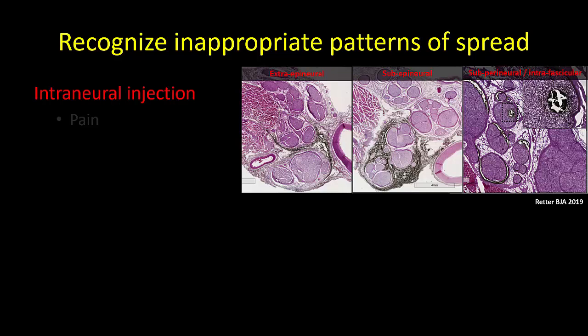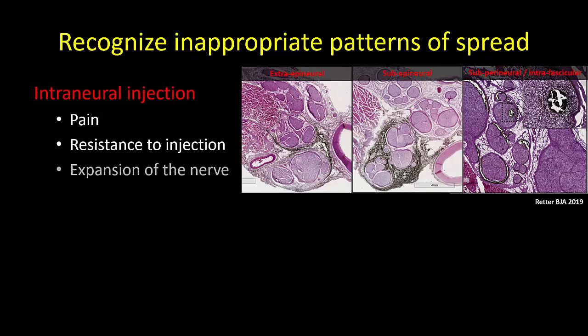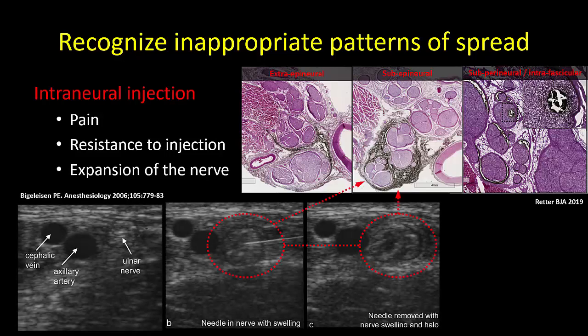Intraneural injection should be suspected if the patient complains of pain on injection or if there is resistance to injection. Pain is not a very sensitive or specific marker but it should always prompt you to carefully re-evaluate where you are. Similarly, resistance is usually a result of the needle tip being pressed up against a fascial layer rather than within the nerve, but again it should prompt re-evaluation. Expansion of the nerve is the hallmark of being within the epineural sheath. It is impossible to tell if the injectate is being contained just under the epineurium or is subperineural or even intravascular, and thus should be avoided. The only good news is that if you do accidentally inject a small volume intraneurally, it rarely results in clinically significant injury.